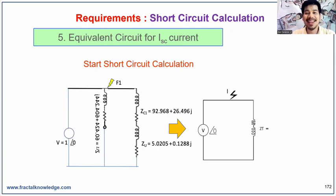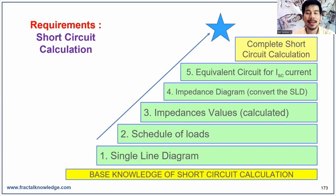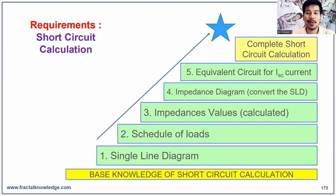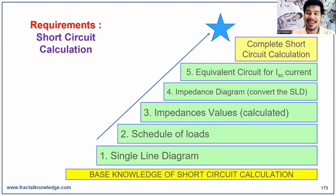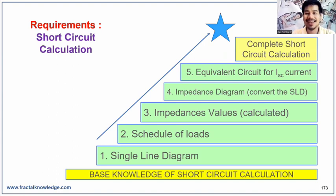The fifth requirement is to simplify the impedance diagram to the fault point reference, to be able to use Ohm's law to calculate the fault current at specific points. To summarize, we covered all the base knowledge of short circuit calculation and the steps required to complete the study: the single line diagram, schedule of loads, calculated impedance values, the impedance diagram converted from the single line diagram, and the equivalent circuit for short circuit currents.